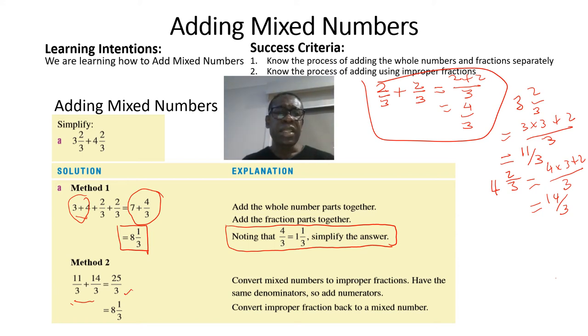We add the numerators together. 11 plus 14 gives us 25. We ask ourselves how many times can 3 go into 25? It will go into 25 eight times, because 3 times 8 is 24. 25 take away 24 will give you a remainder of 1.